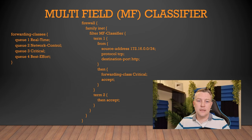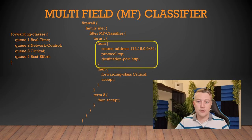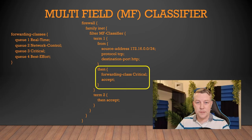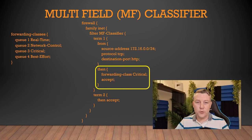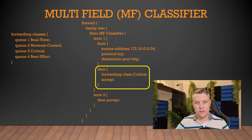We're creating a simple filter here called MF classifier. The first term identifies HTTP traffic coming from the 172.16.0.0 network and puts it in the critical forwarding class. We also need to accept this traffic so we don't filter it out — remember, this is a firewall filter, so if we don't accept it, it will drop the traffic. We could add more terms to match more traffic and put different types into different forwarding classes, but we'll keep it simple. A final term is needed to accept remaining traffic so anything unmatched is still allowed through.